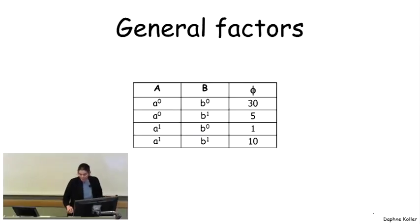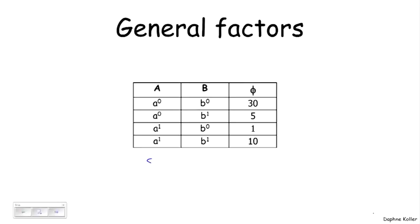Now, these are the factors that we're dealing with will not always correspond to probability. So here's an example of a general factor that really doesn't map in any way to probability because the numbers aren't even in the range zero one. As we'll see, these kinds of factors are nonetheless useful. This is a factor whose scope is the set of variables A comma B. And it still gives me a real valued number for each assignment to A and B.